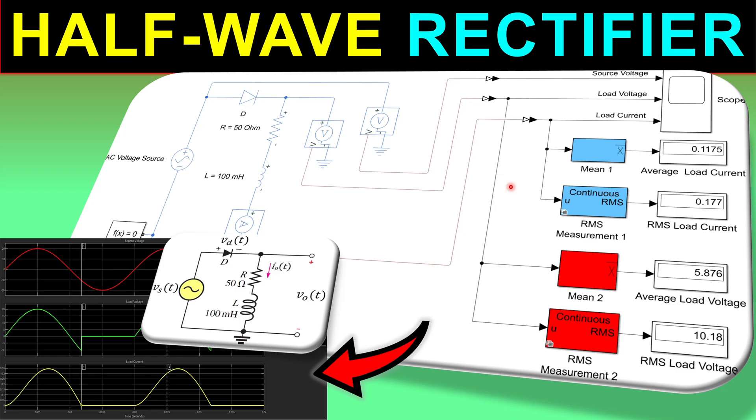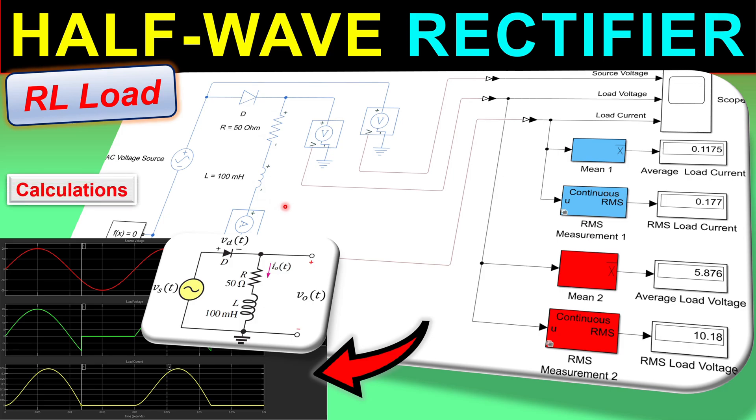Greetings and welcome to a new video about half-wave rectifiers. In this example we will discuss the half-wave rectifier having an RL load in series combination. In the previous example we have seen a half-wave rectifier with a pure resistive load and now we will see what the effect is of this inductor for our load current and load voltage and also the other parameters in our circuit. We will see that step by step shortly in our calculation and also verify this in MATLAB Simulink simulations.